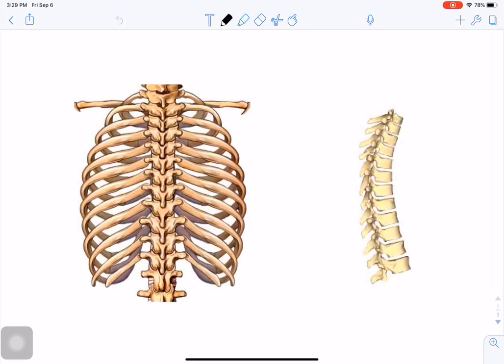These are the last of the intrinsic muscles of the back that we will be talking about. They're small segmental muscles, and there are three of them. We'll start with the smallest ones, the interspinales muscles.